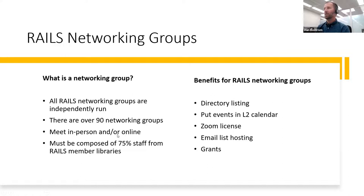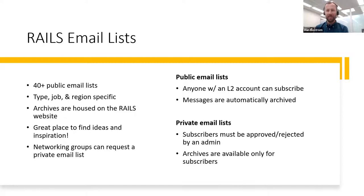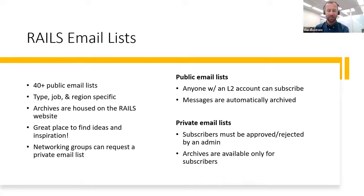The next section we're going to talk about is email lists. These are a great place to find inspiration. Rails offers around 40 different public email lists. Public lists are organized around type, job/topic, and region. For example, we have four type-specific email lists, and those are public, academic, school, and special. You could subscribe to any or all of those.